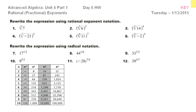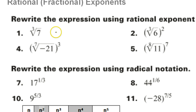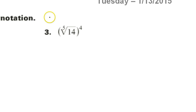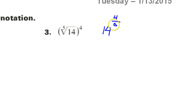Looking at problem 1, if I want to rewrite in exponent form, power over root gives 1/3 — the cube root is simply the 1/3 power. For problem 2, power over root gives 6 to the 2/3 power. For problem 3, 4 is the power and 5 is the root, so power over root gives 4/5.